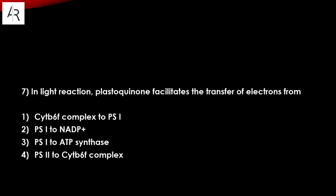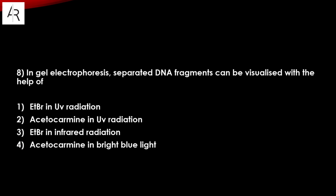Question number seven: in the light reaction, plastocyanin facilitates the transfer of electrons from the cytochrome B6F complex to PS1, from PS1 to NADP+, from PS1 to ATP synthetase, and from PS2 to the cytochrome B6F complex. Option number four is the answer — it performs electron transport.